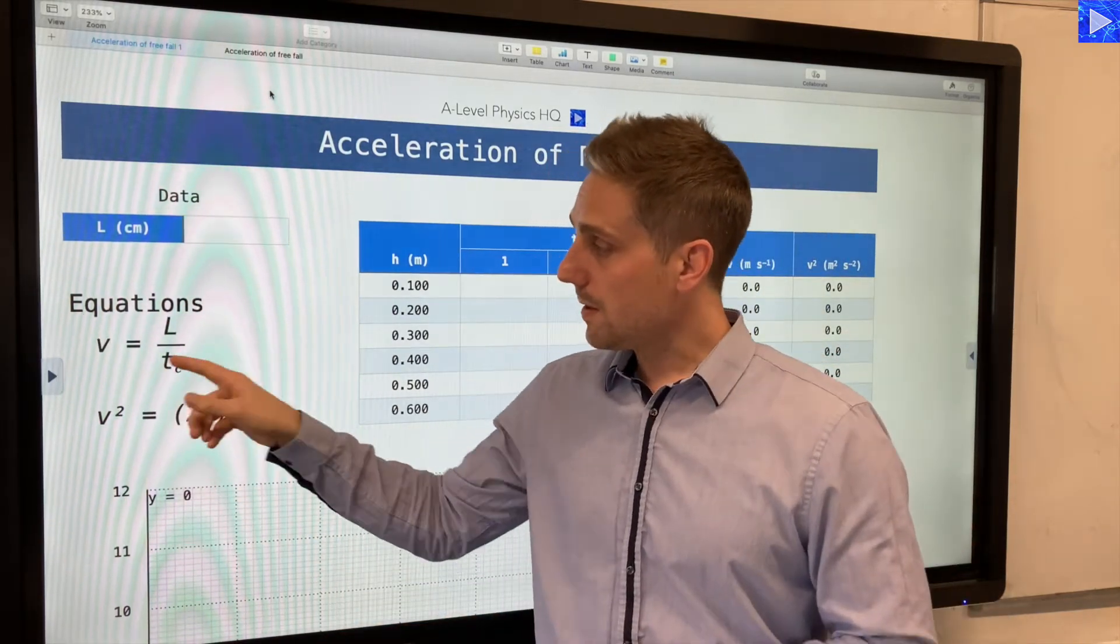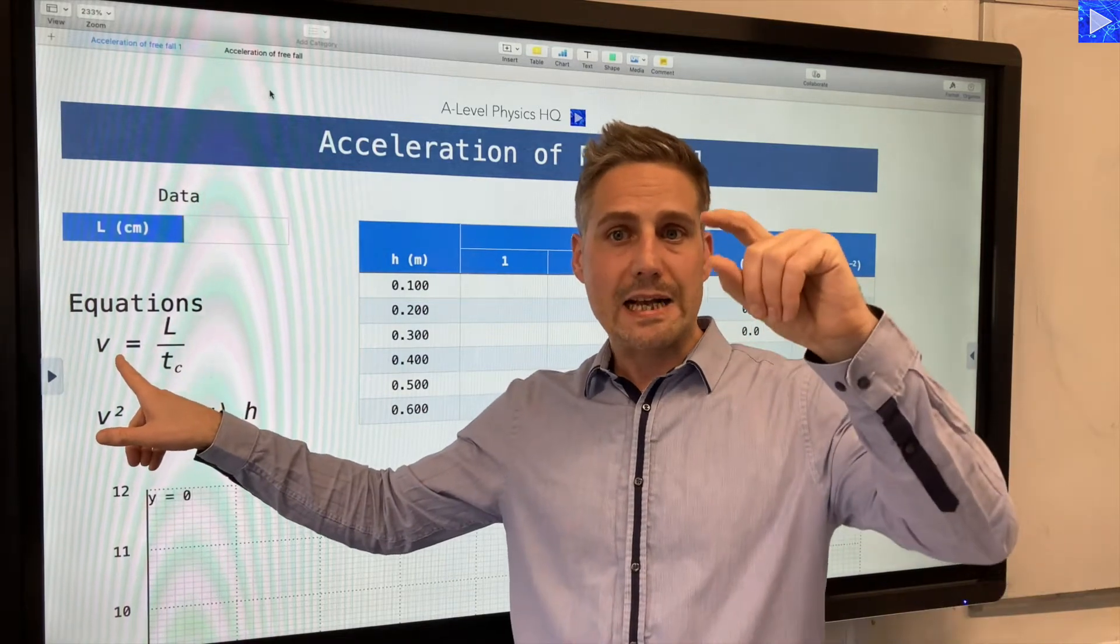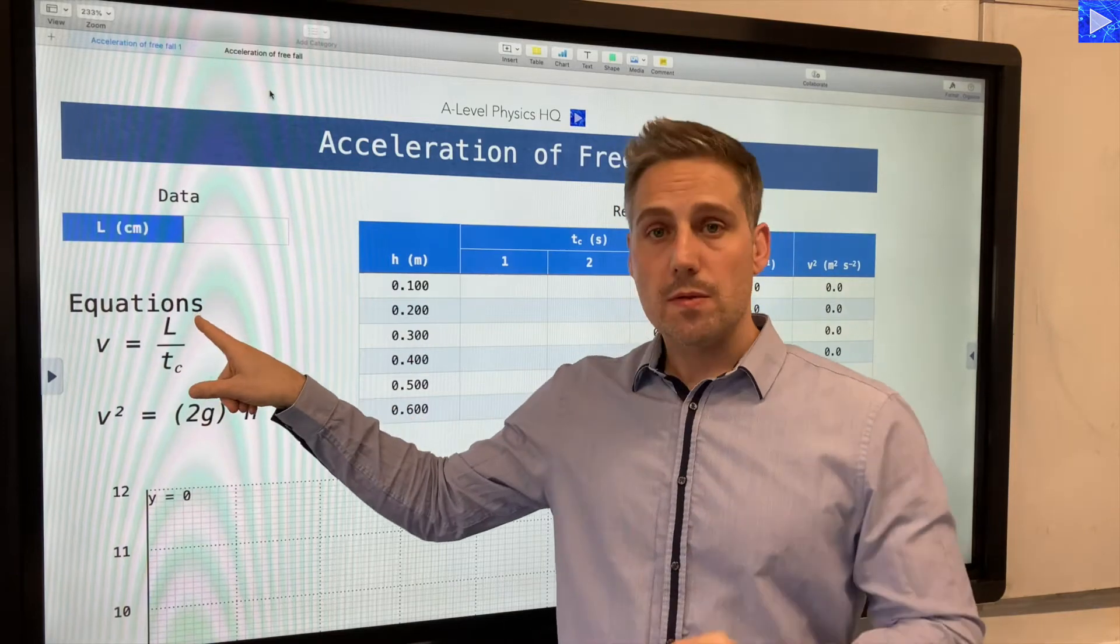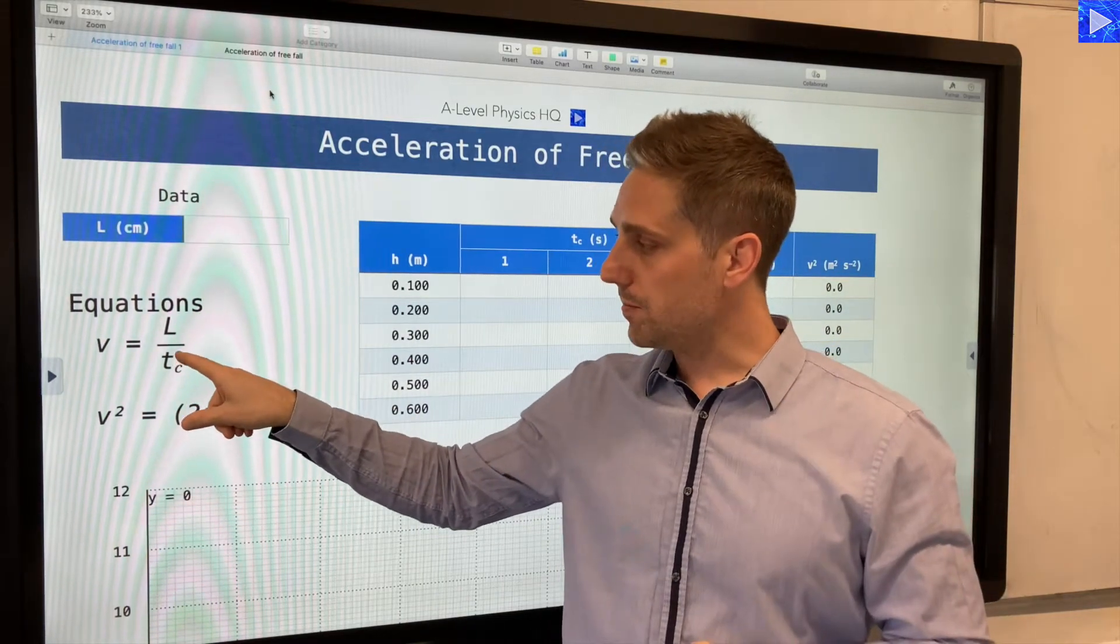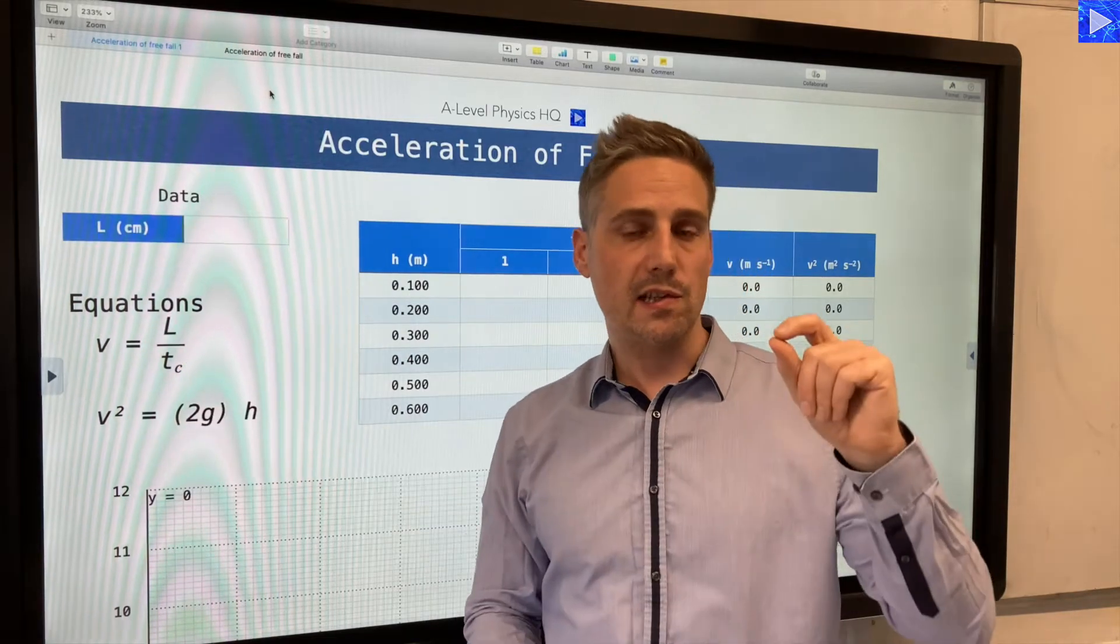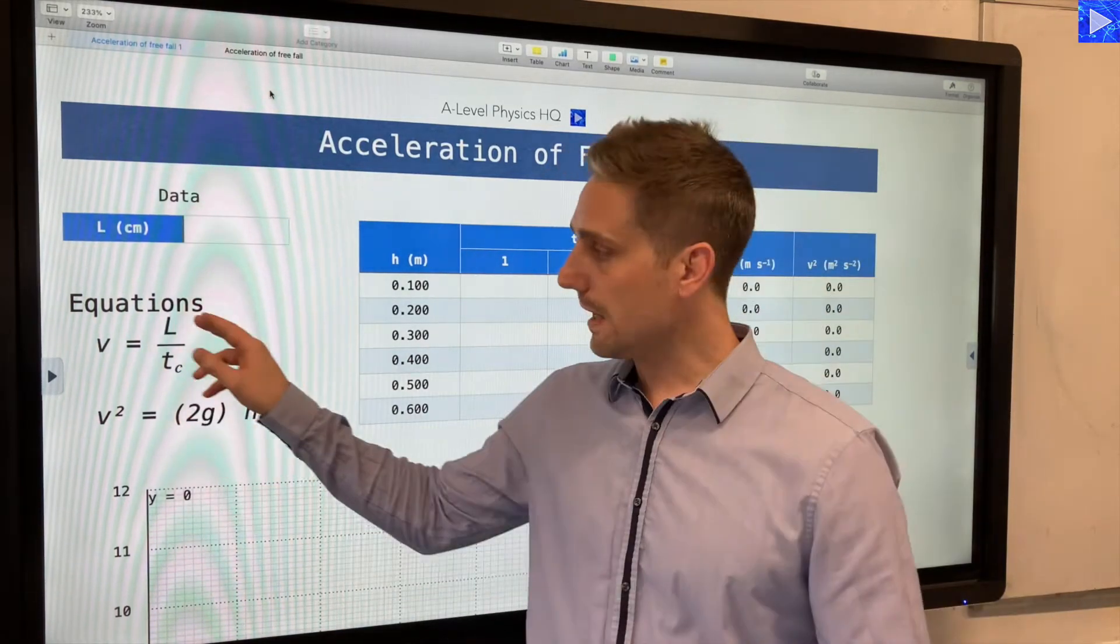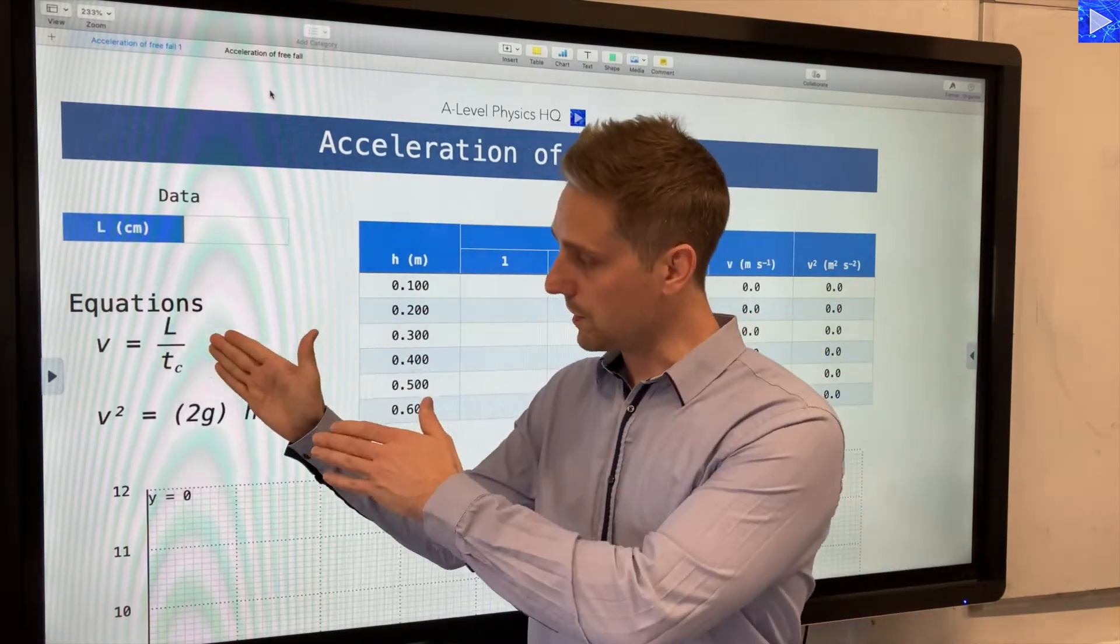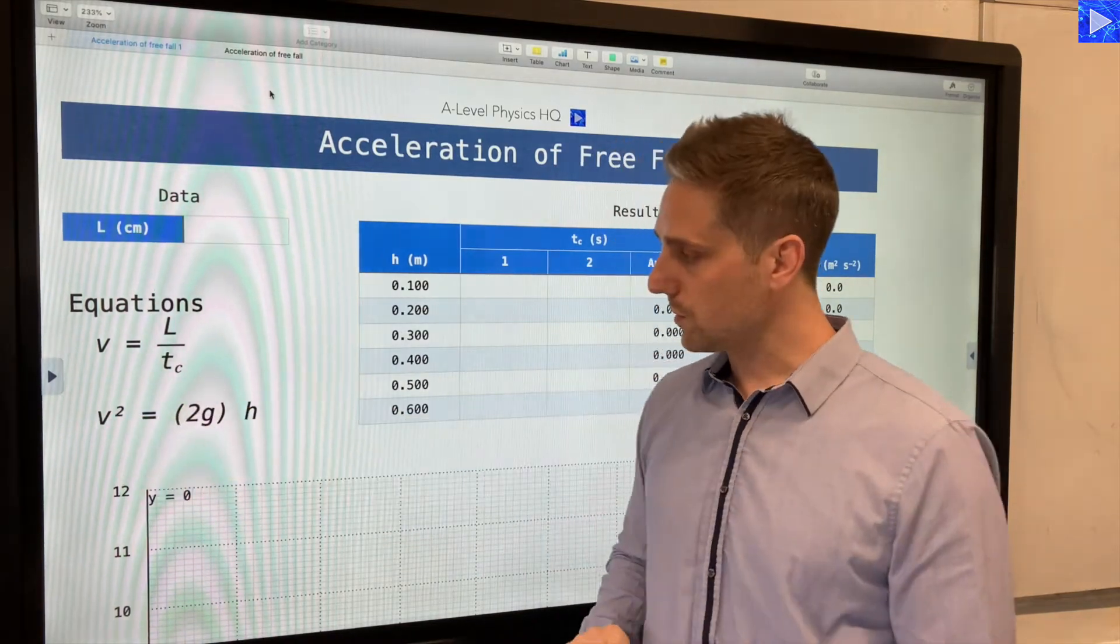The final velocity of the card is going to be the mean velocity as it's moving through the light beam, which equals the length of the card (5 cm) divided by Tc, the time for the card to move through the light beam. We are determining the final velocity here, and when we square that, that's the v² of this equation.